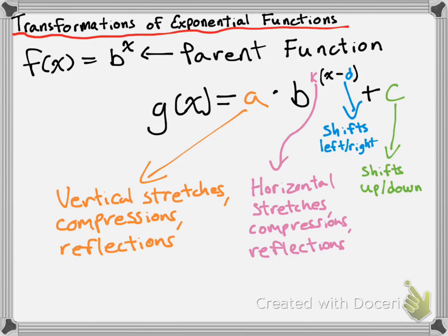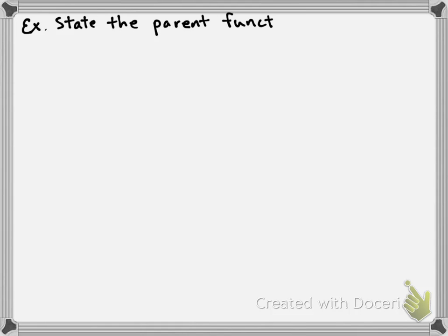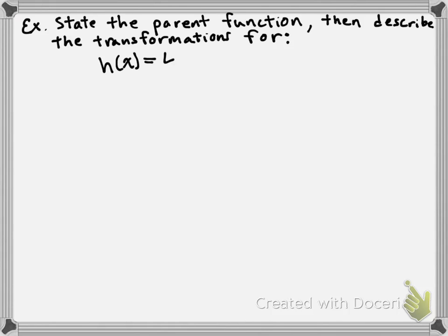So what we're going to do now is take a look at an example. We're going to state the parent function and describe the transformations for the function. Let's say our transformed function is h of x is equal to 4 times 3 to the power of 2x minus 2, plus 1. First, I want you to pause the video and state the parent function, then resume.